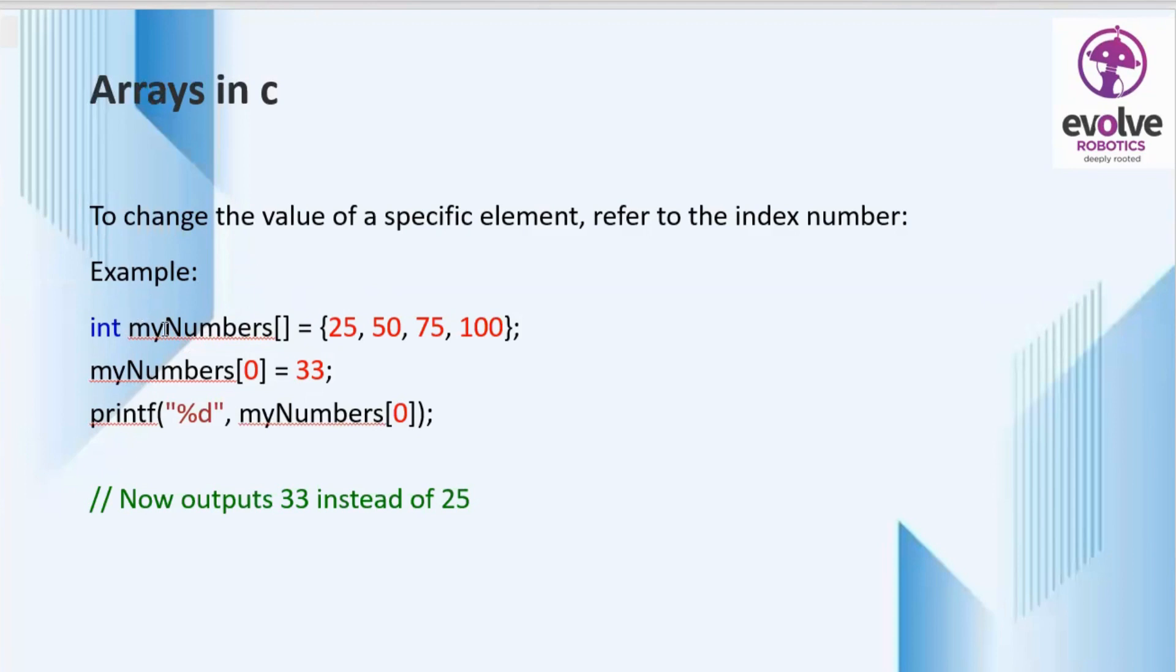So in myNumbers here we can see the elements and myNumbers[0] equals 33. Then there is a function for printing. So we can get the output 33 instead of 25. We are changing the first element in the myNumbers array.